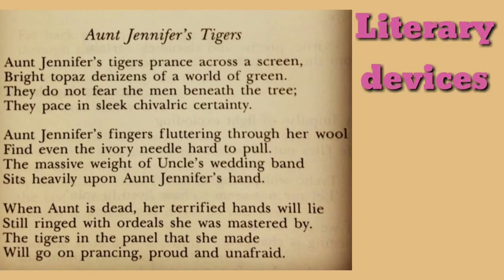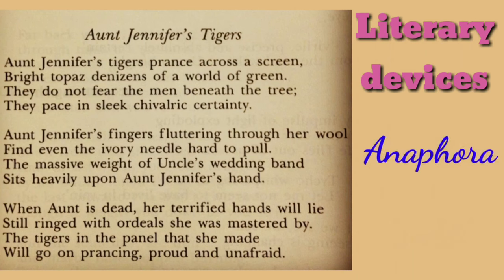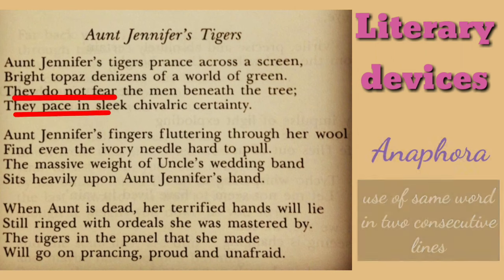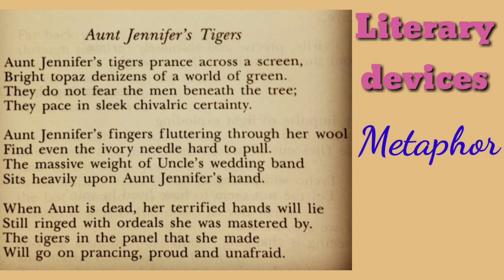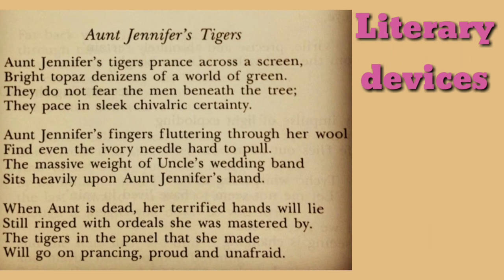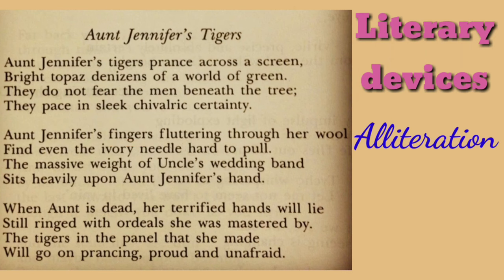Literary devices in the poem: rhyme scheme AABB; anaphora — 'they do not' and 'they pace' with the word 'they' repeated; metaphor — yellow-colored tigers compared to topaz; alliteration — 'fingers fluttering' with the F sound repeated; and alliteration in the last line 'prancing proud' with the P sound repeated.